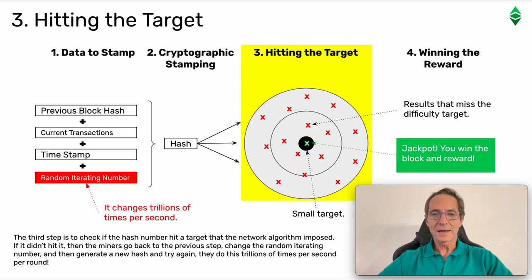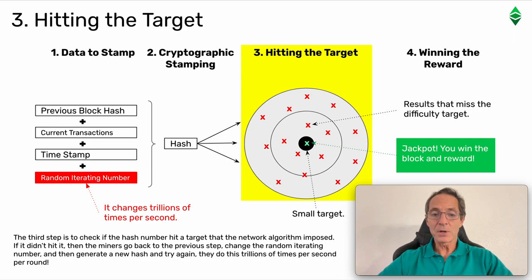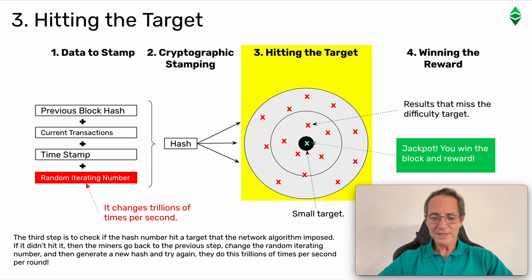Step three: hitting the target. The third step is to check if the hash number hit a target that the network algorithm imposed. If it didn't hit it, then the miners go back to the previous step, change the random iterating number, and then generate a new hash and try again. They do this trillions of times per second per round.